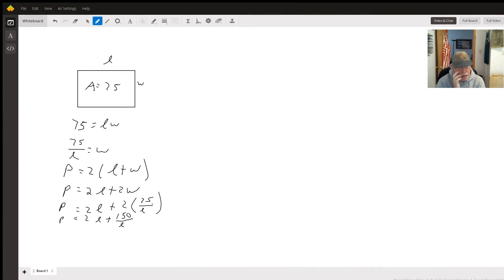Hello, in this problem they tell us the area and we want to minimize the amount of fencing, so we want to minimize the perimeter that we're going to use. The area is length times width, and the perimeter is two times the length plus the width. I need that perimeter equation to be in terms of one variable, so we use the area equation to say that 75 divided by L is going to equal W.